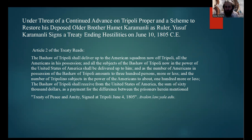The treaty had a variety of different stipulations, but the main one to note was Article 2, which reads that the Pasha of Tripoli shall deliver up to the American squadron all Americans in his possession, and all subjects of the Pasha of Tripoli in the power of the United States shall be delivered to him. As the number of Americans in possession of the Pasha amounted to 300 persons more or less, and the number of Tripolitan subjects in American power to about 100 more or less, the Pasha of Tripoli shall receive from the United States a sum of $60,000 as payment for the difference between the prisoners. So one of the main concerns for the U.S. military was getting American prisoners of war back.